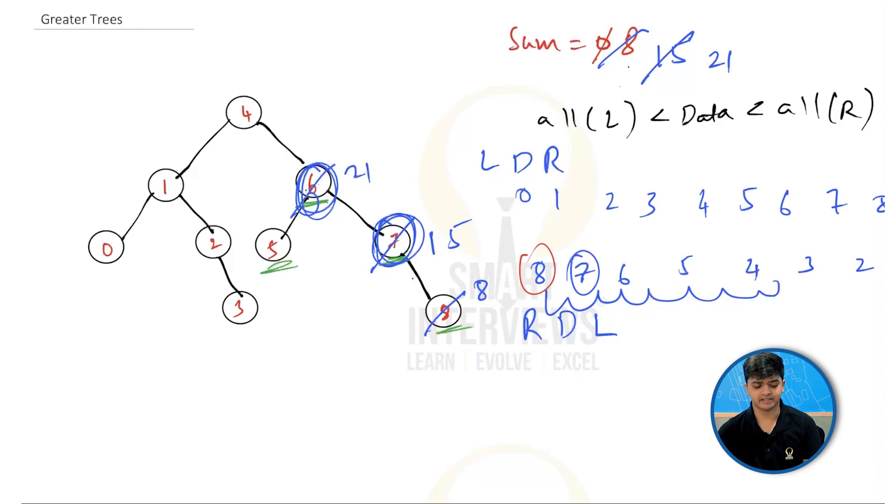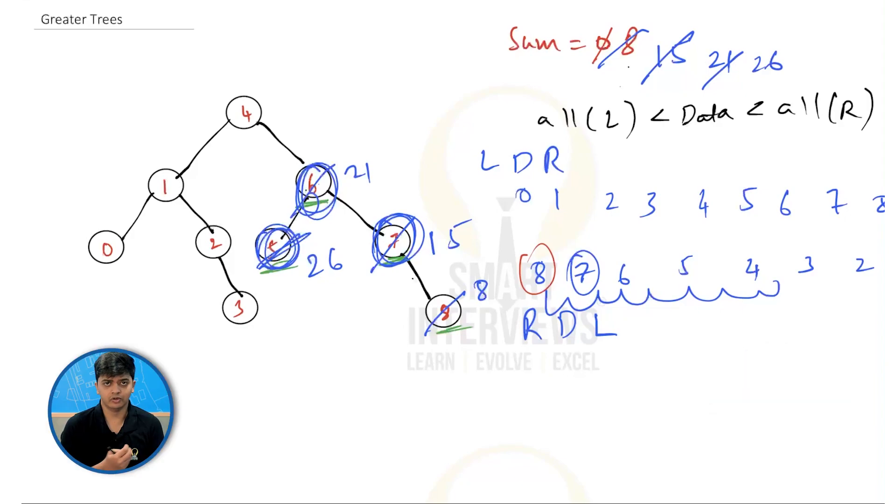My next element is 5. I'm going to add 5, which will make it 26. And if I add 5 over here, in place of 5, I should make it 26. And I'll continue to do this on all the elements or all the nodes.